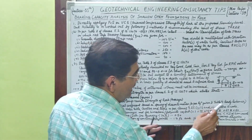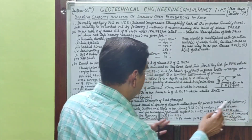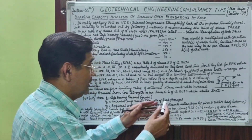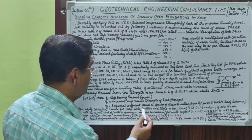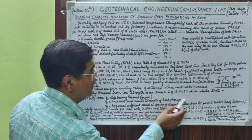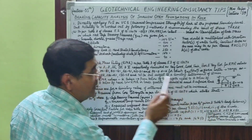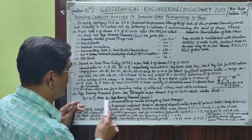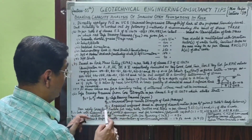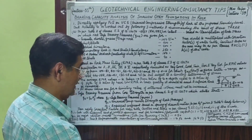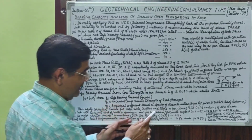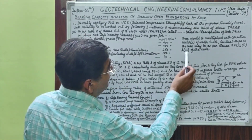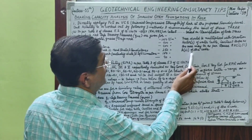This QC value, when multiplied by NJ — an empirical coefficient based on spacing of discontinuities as per the equation given in the code — gives the bearing capacity. Table 4 of IS 12070 provides the NJ values to be used accordingly.